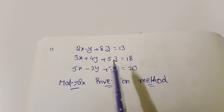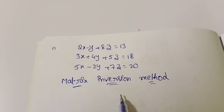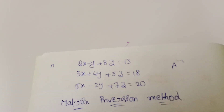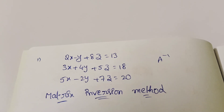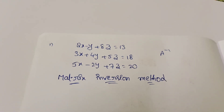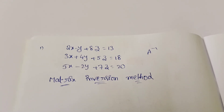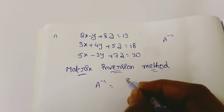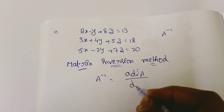Using these equations, we apply the matrix inversion method. We need to find A inverse. The formula is: A inverse equals adjoint of A divided by determinant of A.